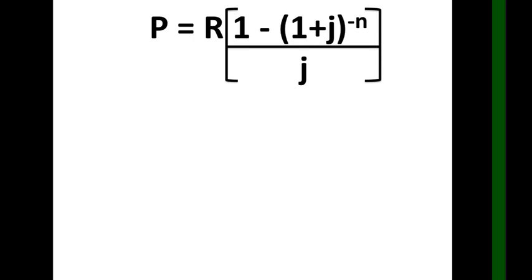P equals R quantity 1 minus quantity 1 plus j raised to negative n over j. So we will use this formula. We need to find j and n in the problem first, and then we can solve for P or the present value.